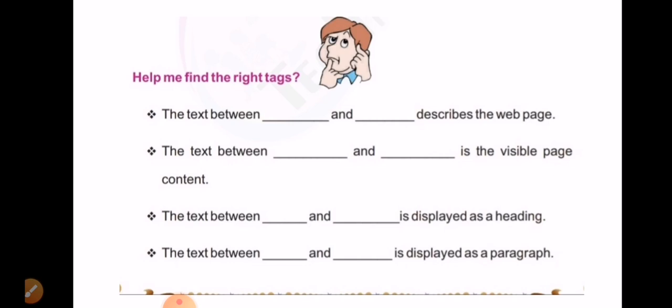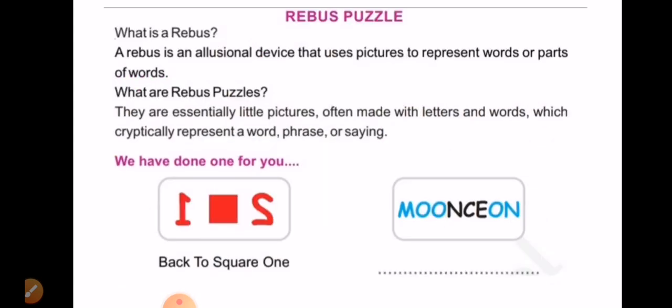Then fourth one. The text between dash and dash is displayed as a paragraph. The answer is P. Within the angle bracket, you can put the starting tag and the ending tag.